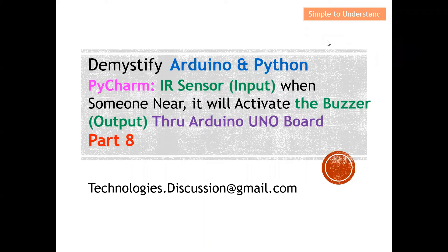Hello everyone, welcome to technology's discussion channel. Today I'd like to continue the discussion on Arduino and Python programming. For this video, the objective is to demonstrate how to use an IR sensor together with a buzzer. I'm going to configure my IR sensor as an input while my buzzer as an output, so when someone is near my IR sensor, it will activate the buzzer.